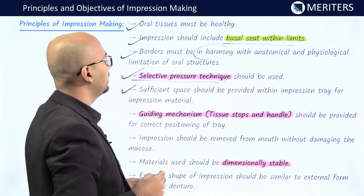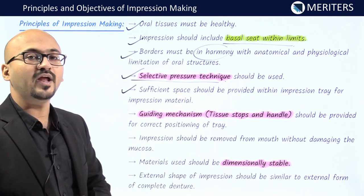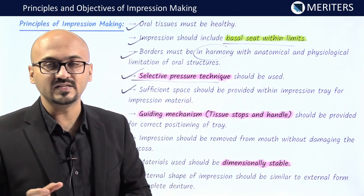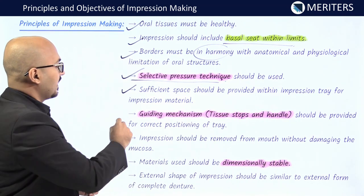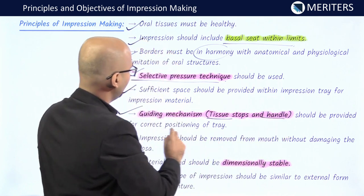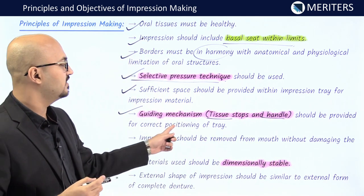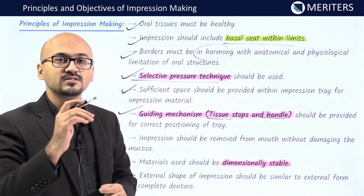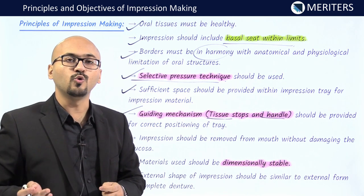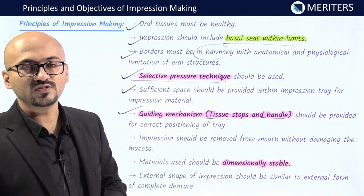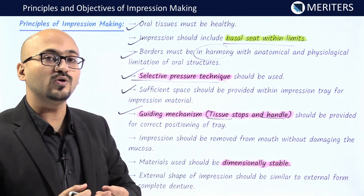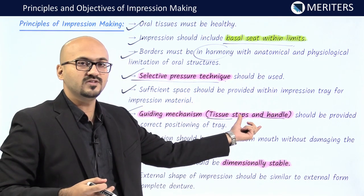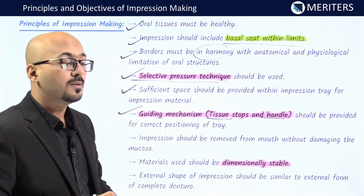Sufficient space should be provided with an impression tray for impression material. Whether primary or final impression, there should be enough space for the material between the tray and the tissues to record the impression. Guiding mechanisms like tissue stops and a handle should be provided for correct positioning of the tray. Tissue stops are specially fabricated in a custom tray so that you can orient the tray back in its position without distorting the tissues or the border molding, helping you return to the same position every time you place the tray in the patient's mouth. The handle helps you place and remove the tray.